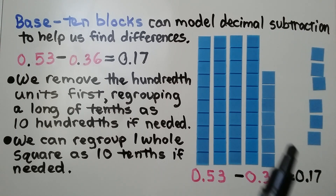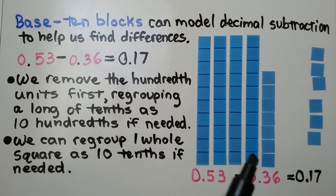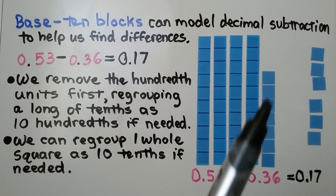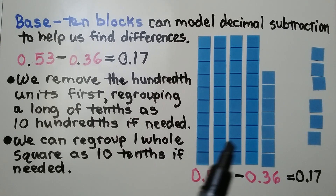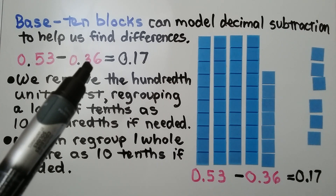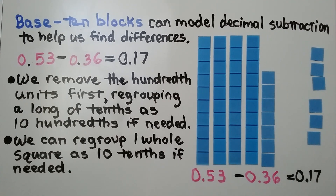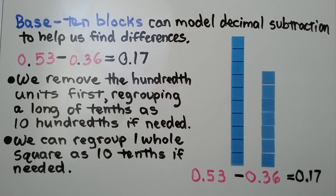We take these six hundredths away — the three that were here and three from up here — and that leaves seven hundredths. We take away three tenths, and that leaves one tenth and seven hundredths, which is seventeen hundredths. We can also regroup one whole square as ten tenths if needed.